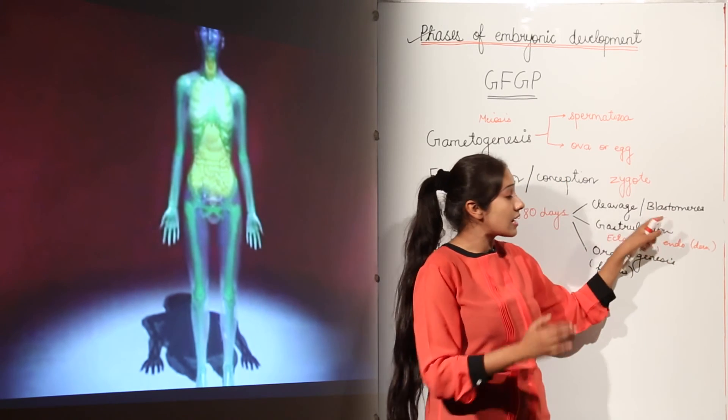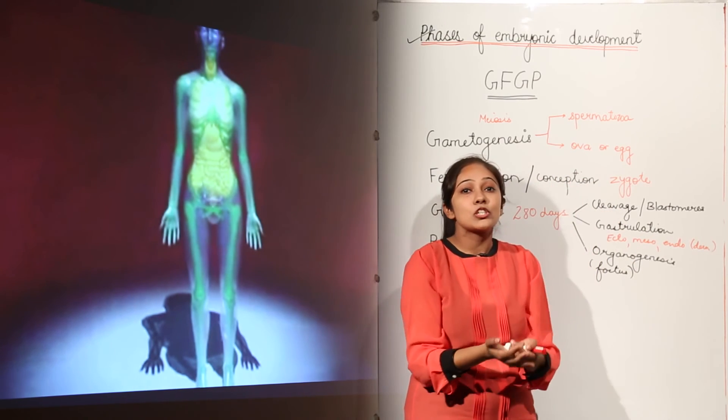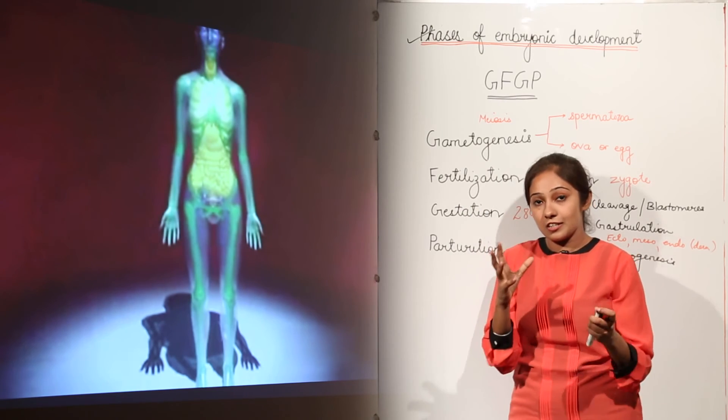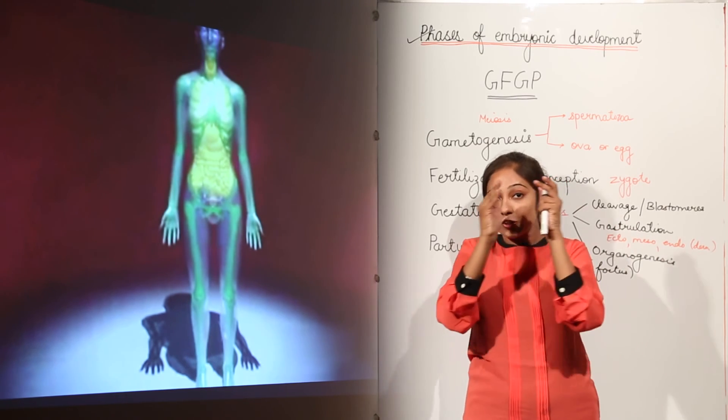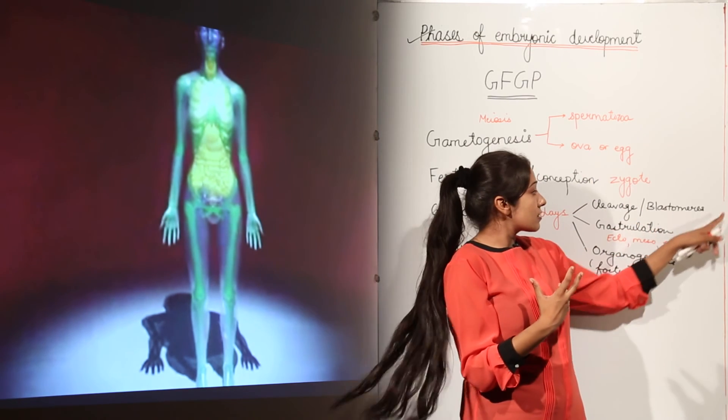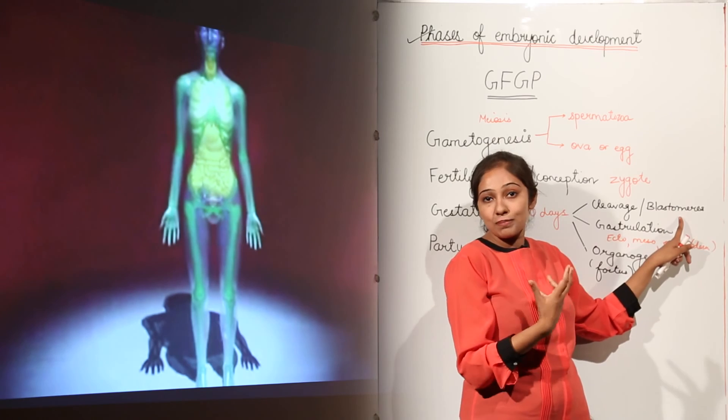This blastomere's outer cells are going to develop tissues like placenta. Placenta is a tissue which is a link between mother and the growing baby. So the outer cells of blastomere are going to serve for the formation of placenta.